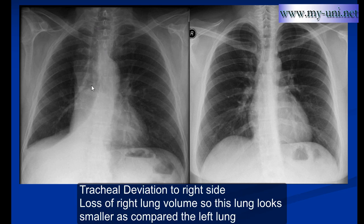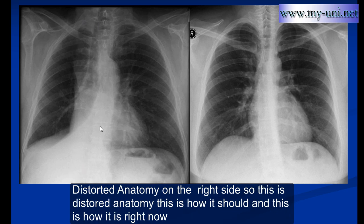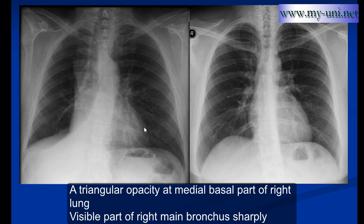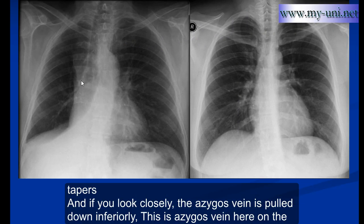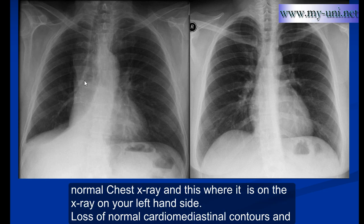Tracheal deviation to the right side. Loss of right lung volume — this lung looks smaller compared to the left lung. Distorted anatomy on the right side. A triangular opacity at the medial basal part of the right lung. The visible part of the right bronchus sharply tapers. And if you look closely, the azygos vein is pulled down inferiorly. This is the azygos vein on a normal chest x-ray, and this is where it is on the x-ray on your left hand side.